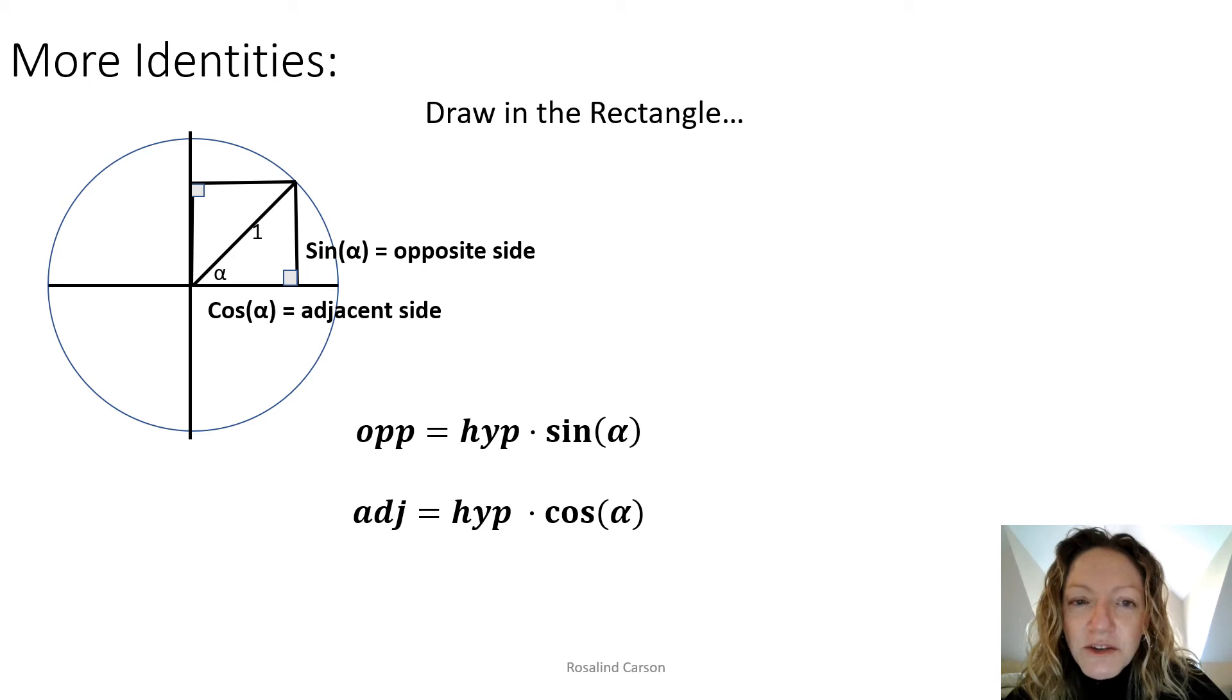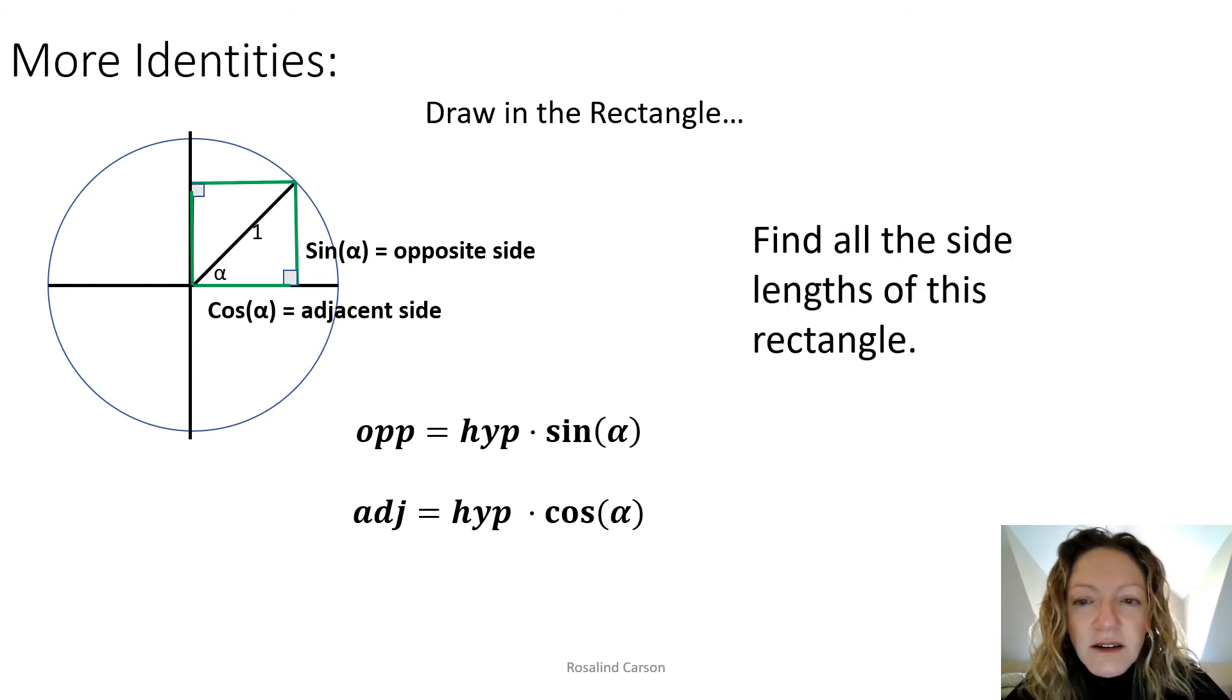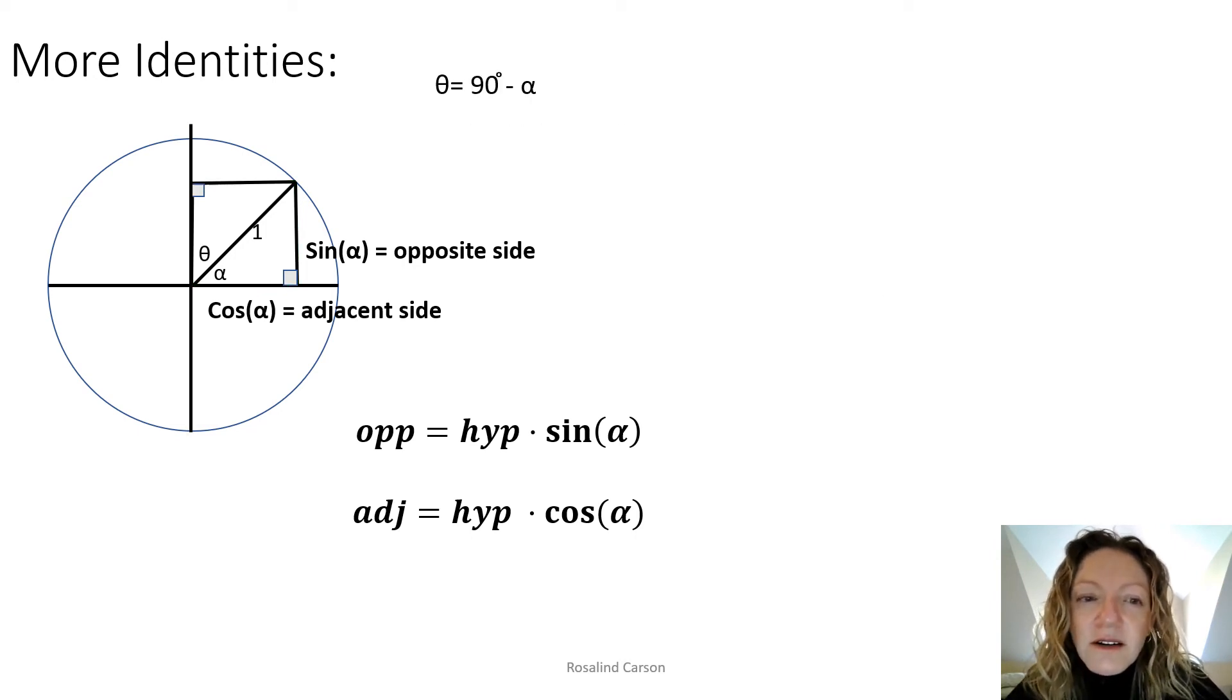Wherever you drew your angle movement, we are going to complete the rectangle by drawing in a line perpendicular to the y-axis, whatever quadrant you're in. I'm going to highlight this rectangle in green. The task for the students now is just to find all the side lengths of the rectangle. Two of them are already given in our original drawing, one of them being sine alpha and cosine alpha. Let's see if we can label the other sides of the rectangle using another angle.